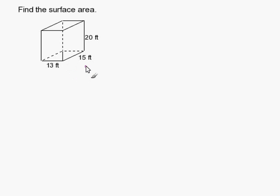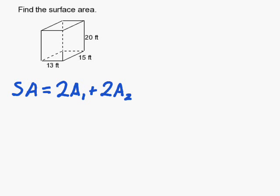To figure out the surface area we need six faces, so that's two times area one, plus two times area two, plus two times area three. Because the front and back have the same area, the side and the side have the same area, and the top and bottom have the same area.